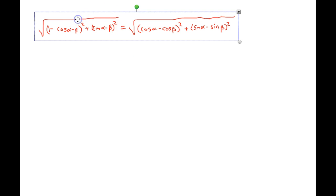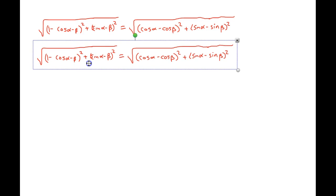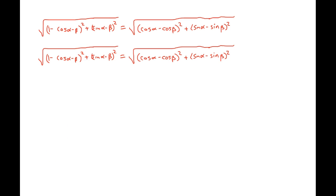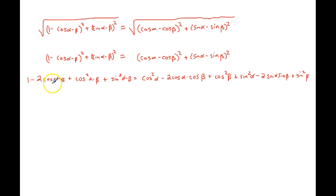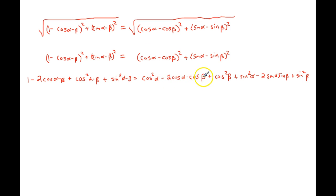If I square both sides, I can get rid of those radicals on the outside. Now I'll square all of these pieces by foiling the binomials out. Expanding: 1 − 2cos(α−β) + cos²(α−β) + sin²(α−β). And on the right side: cos²α − 2cosα cosβ + cos²β + sin²α − 2sinα sinβ + sin²β. Now we start noticing all of these sine-squared and cosine-squared combinations.